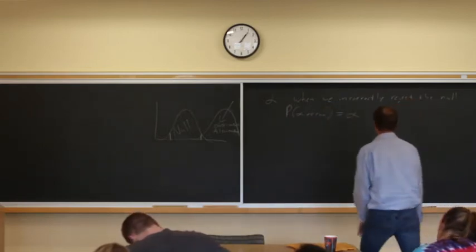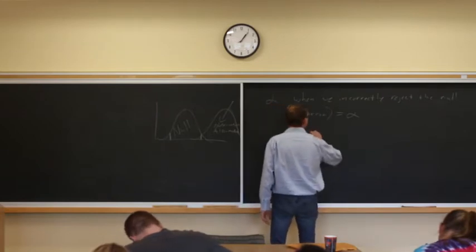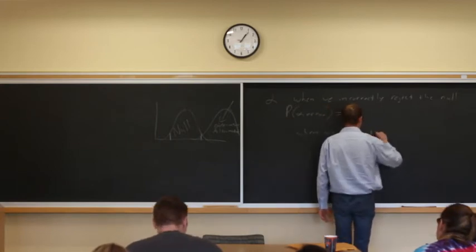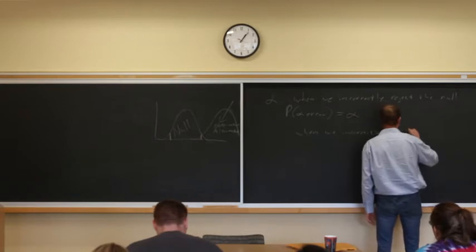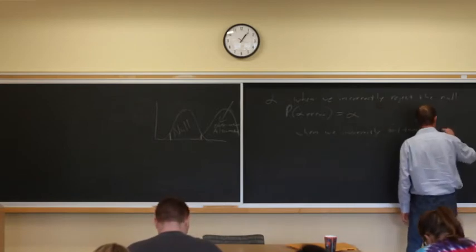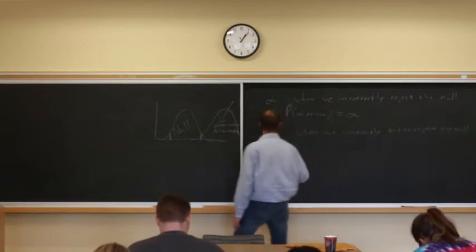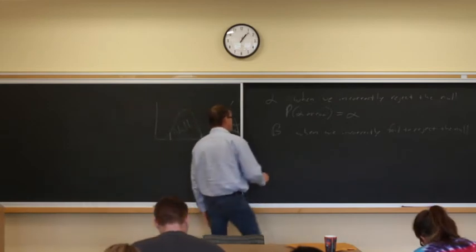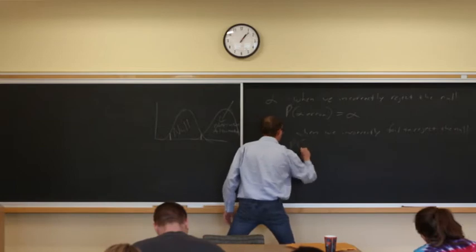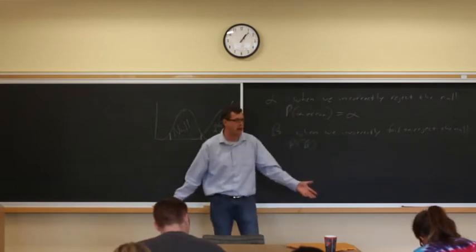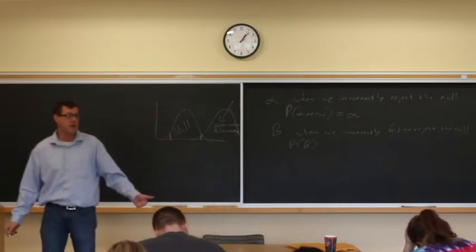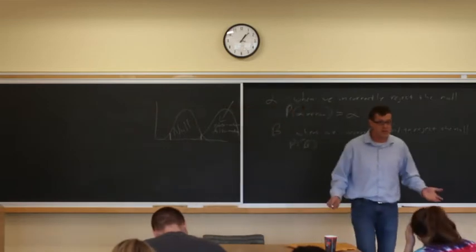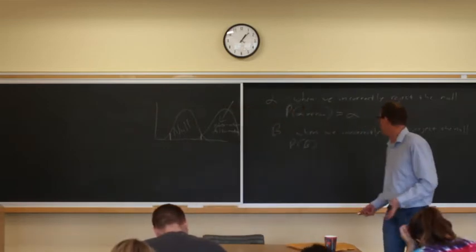The other type of error is when we incorrectly fail to reject the null. And this is beta. So the probability of beta is going to depend on a whole lot of things - all the things we talked about last class. Sample size is bigger, then beta is going to be smaller. We use a paired design instead of an independent design, beta is going to be smaller.